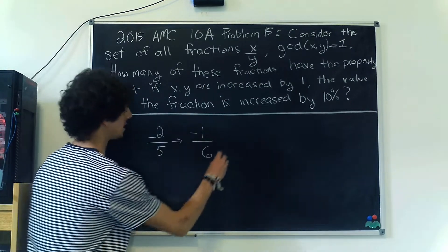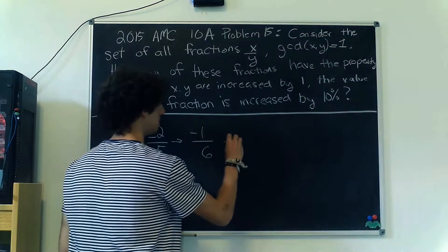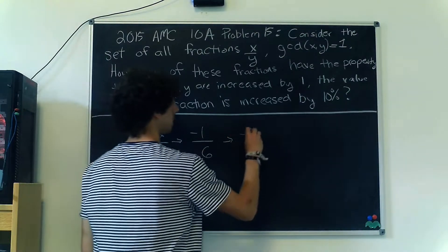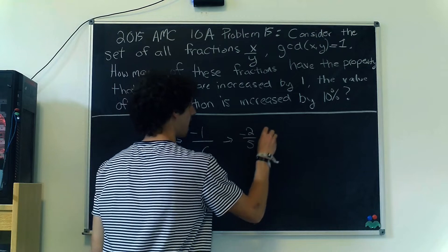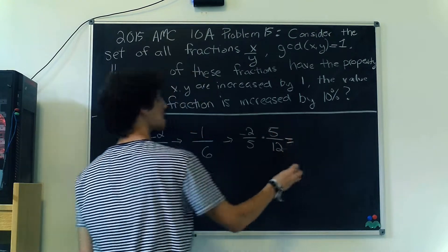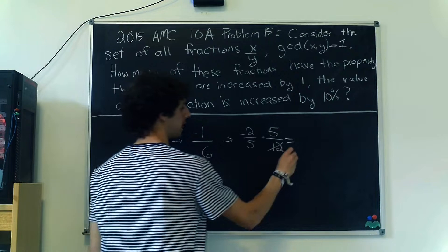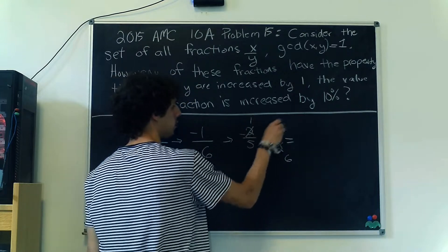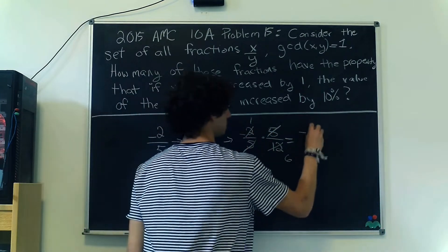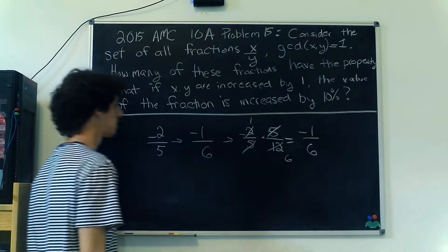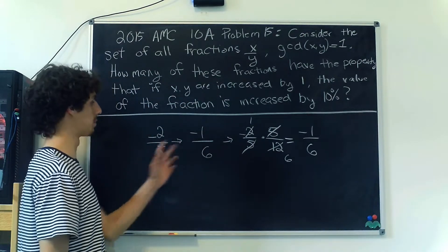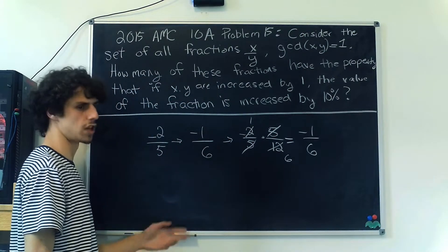The increase here is actually a percent decrease. We're multiplying -2/5 by 5/12 here. The 12 cancels down to 6, the 2 cancels to 1, and the 5s cancel, giving us -1/6. But 5/12 is clearly a percent decrease, which is not what we're looking for.